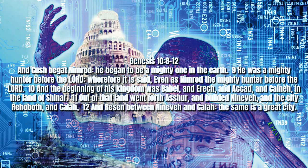As we read in verse 24: And Arphaxad begat Selah and Selah begat Eber, and unto Eber were born two sons. The name of one was Peleg, for in his days the earth was divided — an interesting comment referring to the confusion of tongues occurring at Babel, which we're going to read about in a moment. And Peleg's brother's name was Joktan. Verses 26 to 30 list Joktan's sons, while Peleg's lineage is not given again until chapter 11, where the focus of the entire Old Testament turns to the line of the promised Messiah, the Lord Jesus. These are the families of the sons of Noah after their generations in their nations, and by these were the nations divided in the earth after the flood — they all came through those three sons.